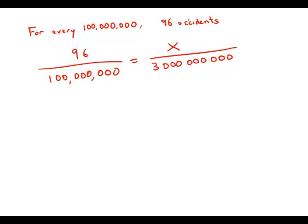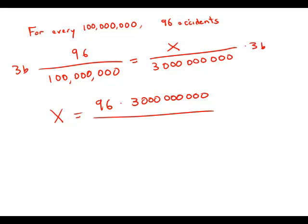The way we solve for x is to multiply both sides by 3 billion, so that we get x equals 96 times 3 billion over 100 million.